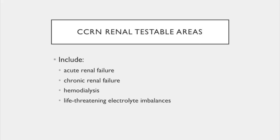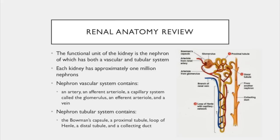I'll start off with renal anatomy. The functional unit of the kidney is called the nephron, which has both a vascular and a tubular system. Each kidney has approximately 1 million nephrons, which play an important role in the fluid balance and electrolyte balance within the body. The vascular system in the nephron contains an artery, an afferent arteriole, a capillary system called the glomerulus, an efferent arteriole, and a vein.